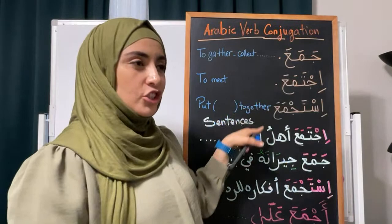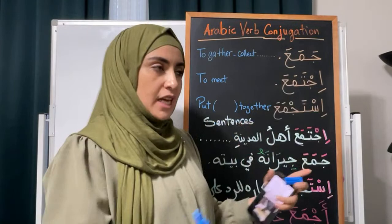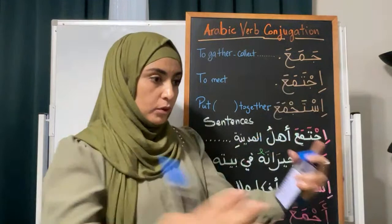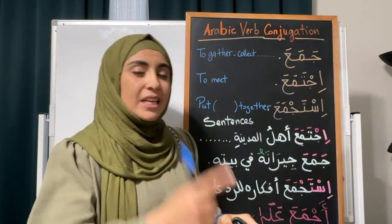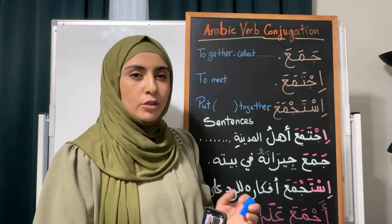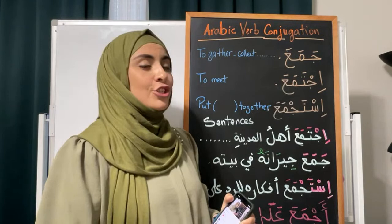If I say ijtama'ah, that includes so many people. It rhymes with ifta'ala. I can say ijtama'ah — people gathered or met together. The employees met together. Even the noun changes — the gerund is completely different. The gerund of ijtama'ah is ijtima'. This form has to do with multiple people coming together.